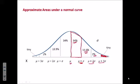Because of symmetry, on the left side of the curve, you would have the same areas. We should memorize these numbers: 34%, 13.5%, 2%, and a very tiny amount for the tail.